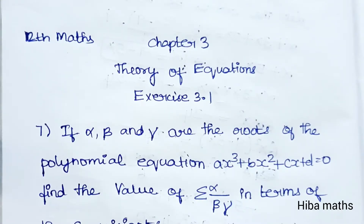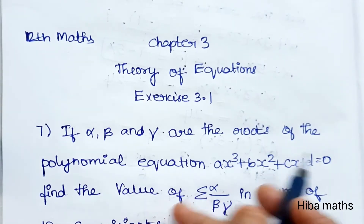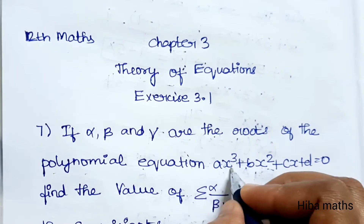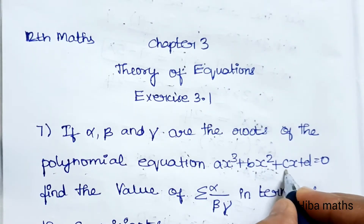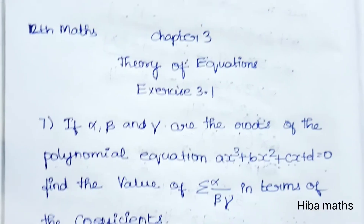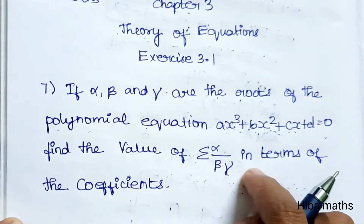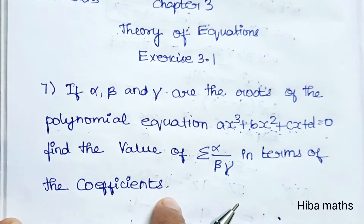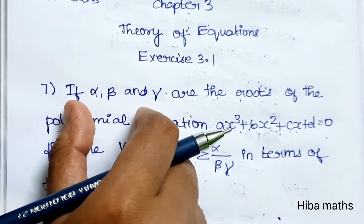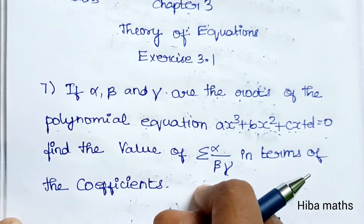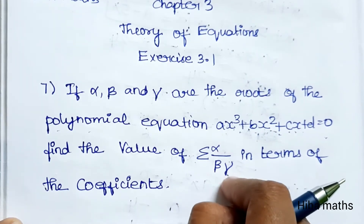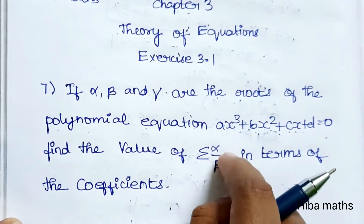Hello students, welcome to Heba Max, 12th standard, Chapter 3: Theory of Equations, Exercise 3.1, 7th question. If alpha, beta, and gamma are the roots of the polynomial equation ax³ + bx² + cx + d = 0, find the value of summation of alpha divided by beta·gamma in terms of the coefficients. We will expand this value.